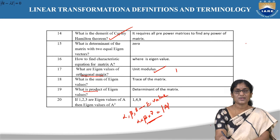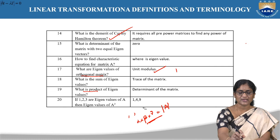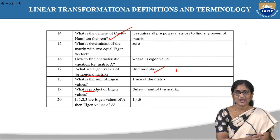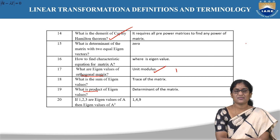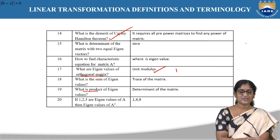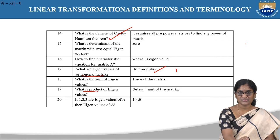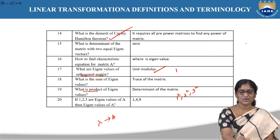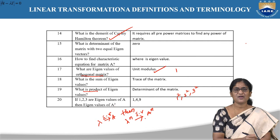If 1, 2, 3 are the eigenvalues of A, what are the eigenvalues of A²? Based on the property that if λ is an eigenvalue of A, then λⁿ is an eigenvalue of Aⁿ — the eigenvalues of A² are 1², 2², 3², that is 1, 4, 9.